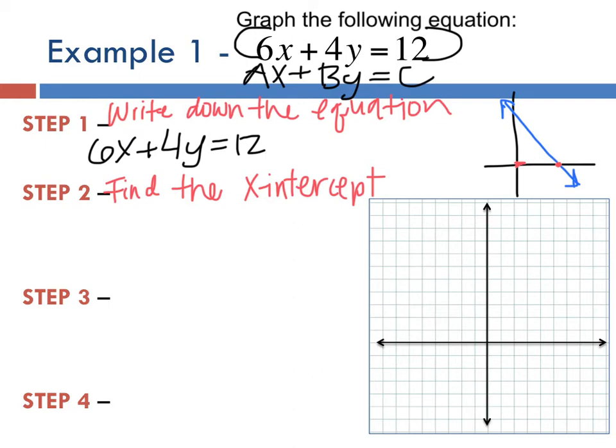For this case, let's plug in 0 for y. You get 6x + 4(0) = 12. 4 times 0 is 0, so 6x = 12.